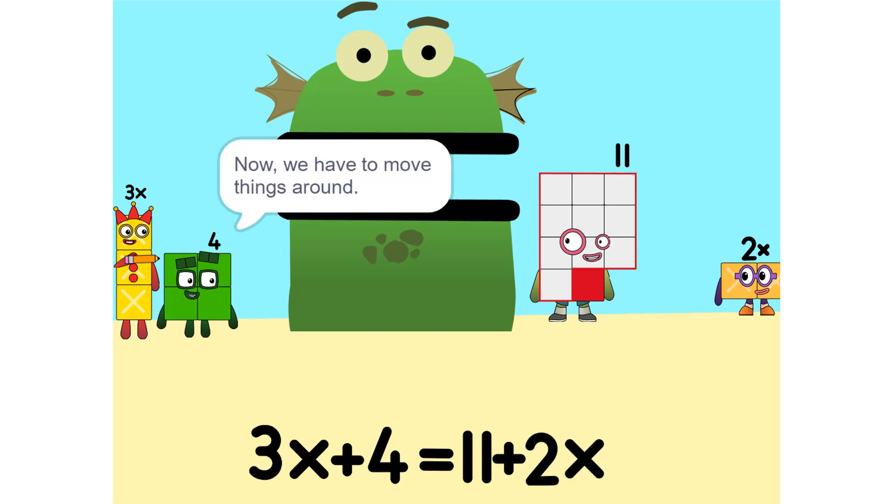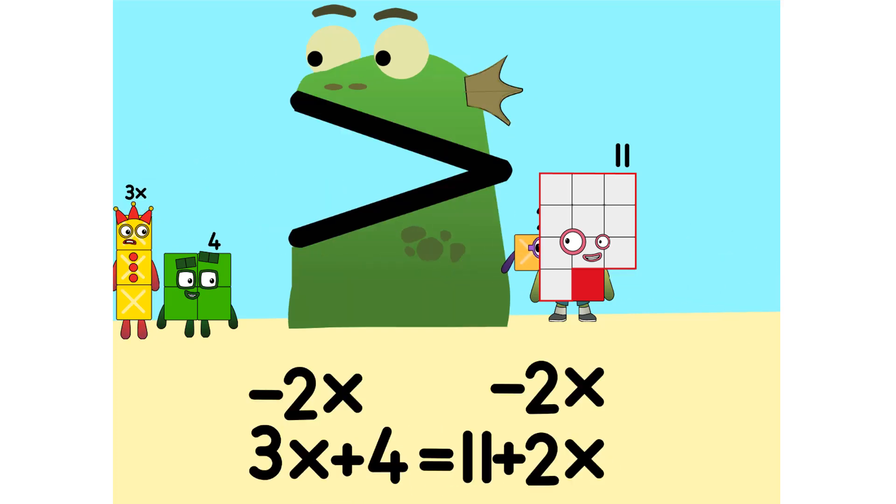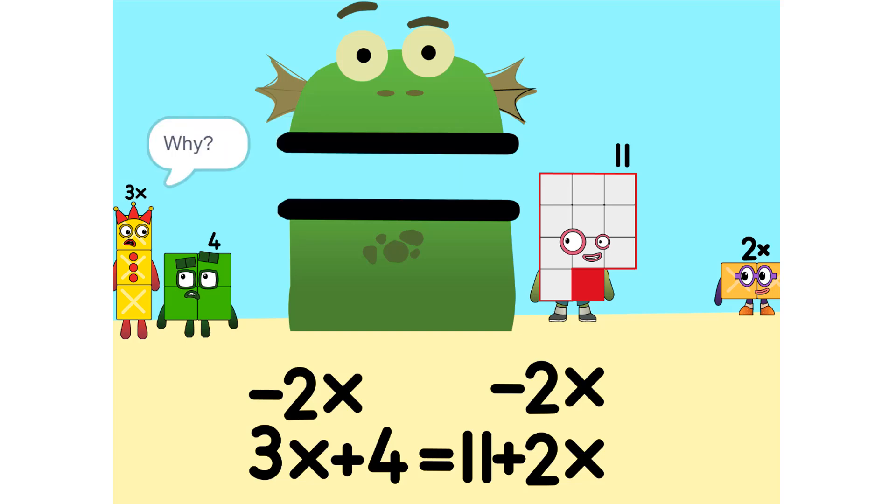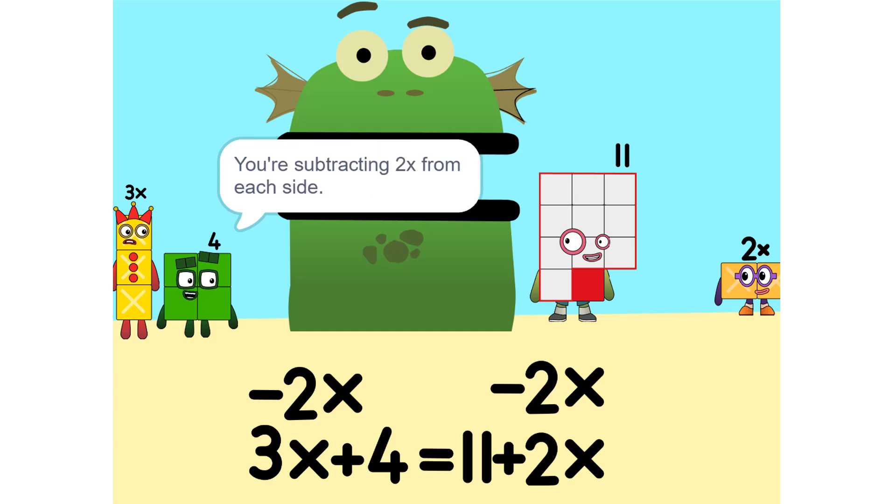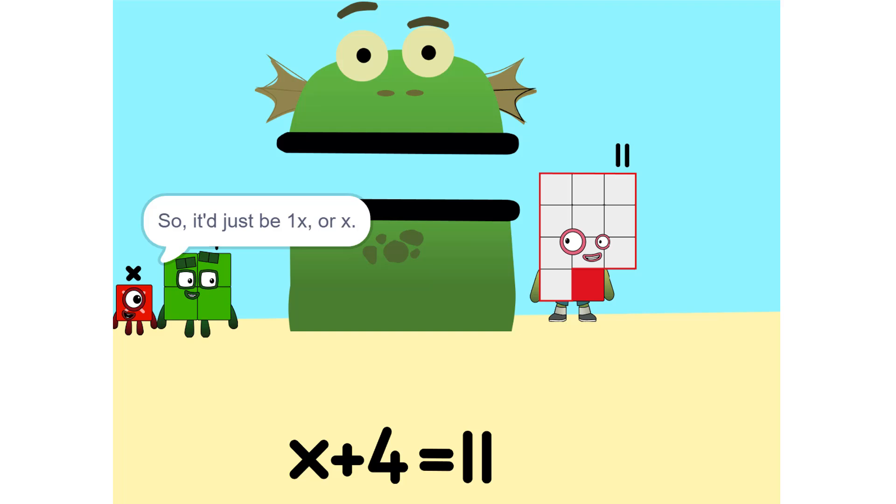Now we have to move things around. We have to move this 2X to this side. Whenever you switch sides, you have to switch its sign. So if it's positive, it becomes negative and vice versa. Why? Think of it this way: you're subtracting 2X from each side. Oh, so it'd just be 1X, or X. Correct.